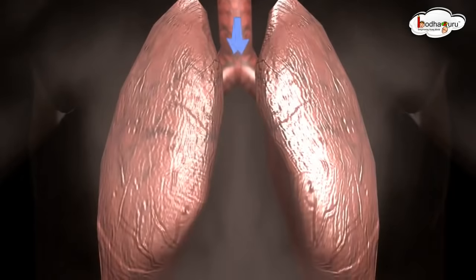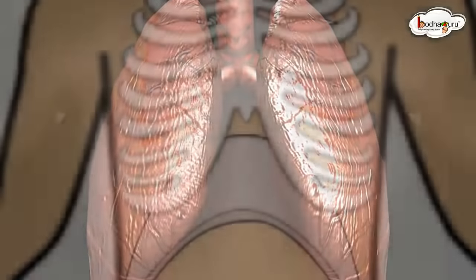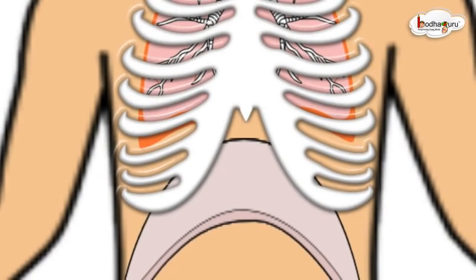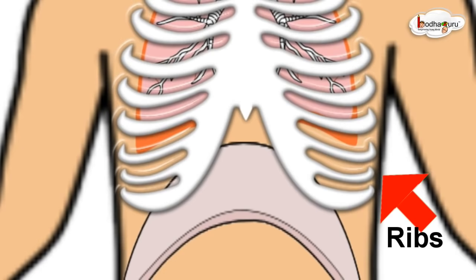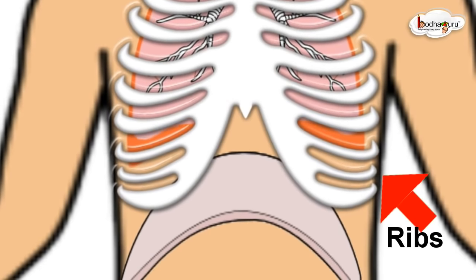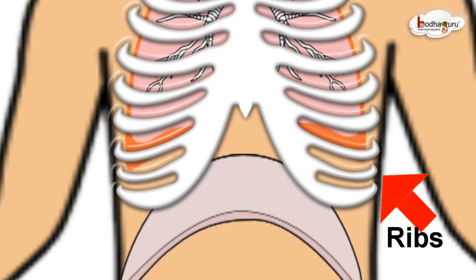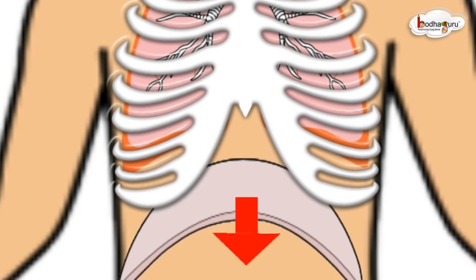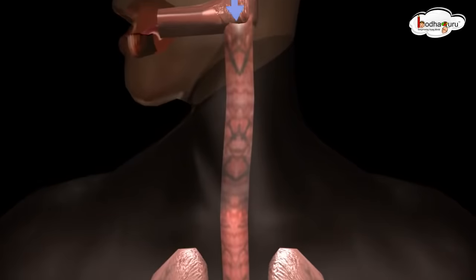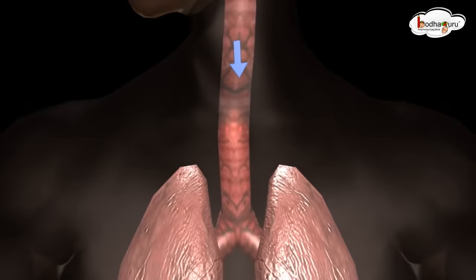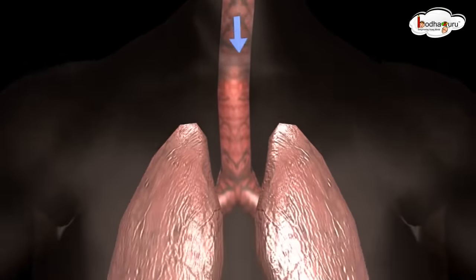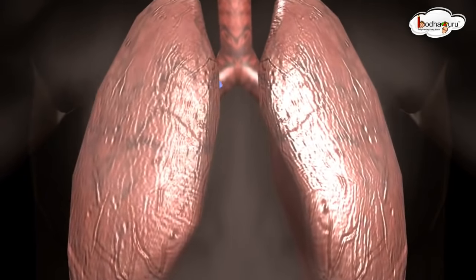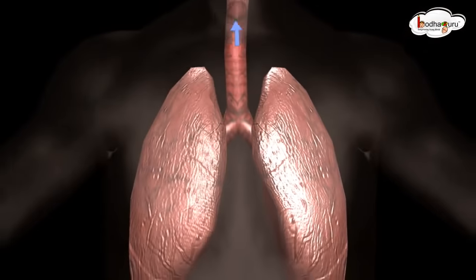Oxygen से भरी वायू शरीर में लेने को Inhalation कहते हैं। Inhalation के दौरान ribs ऊपर की ओर और बाहर की ओर बढ़ती है। Chest cavity बढ़ जाती है और वायू lungs में जाकर lungs को फुला देती है।